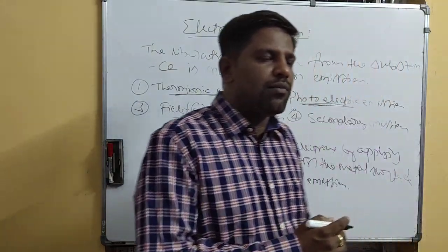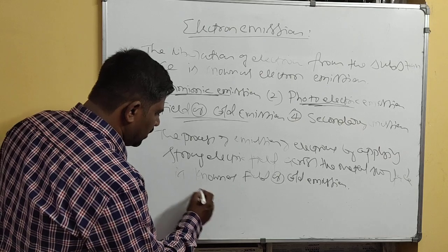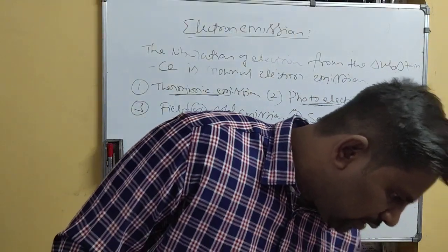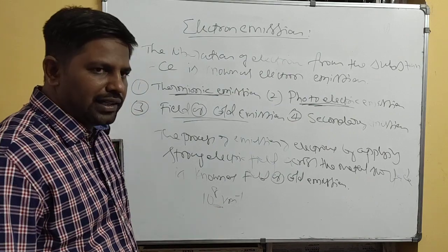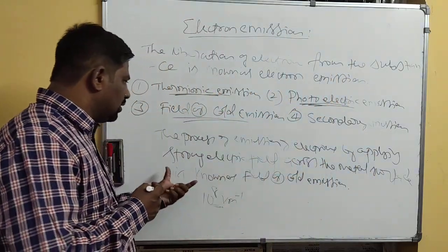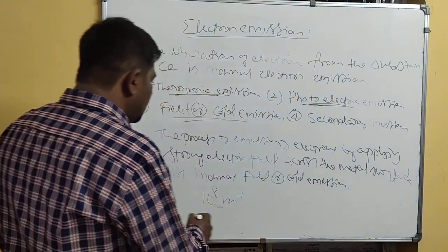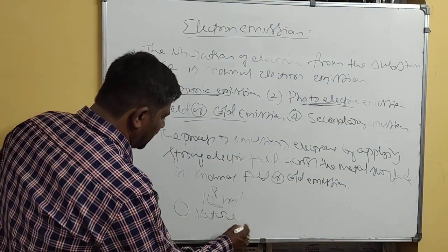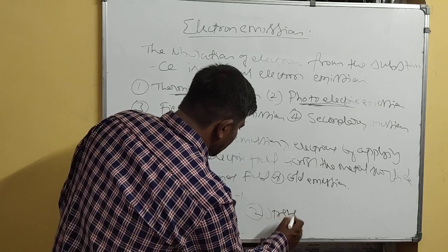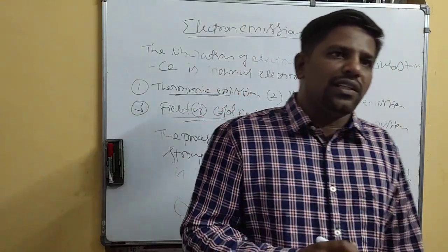In this case, to get the electrons from the metal surface, the range of the electric field is around 10 to the power 8 volt per meter. This is the strength of the electric field applied across the metal surface. The number of electrons liberated depends on the nature of the substance and the strength of the electric field applied across the metal surface.